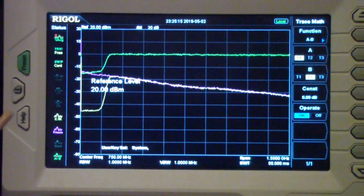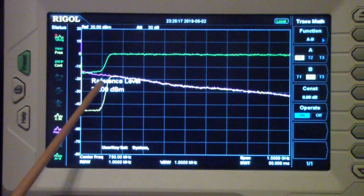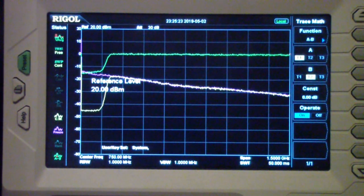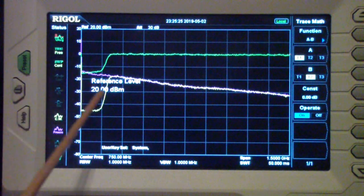The yellow trace is the raw output through the bandpass filter.